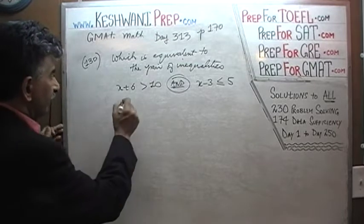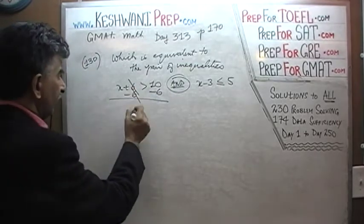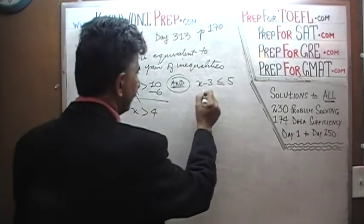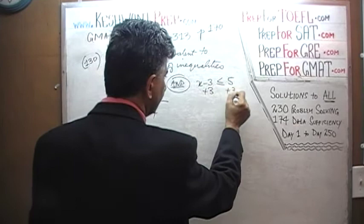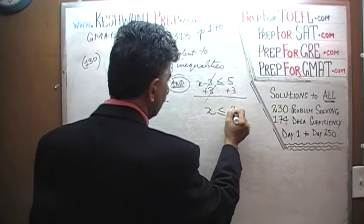We have to solve for x here. Let's subtract 6 from both sides so we can have the x by itself. 6 drops out and this one tells that x has to be more than 4. Let's see what this says. If you were to add 3 to both sides, 3 will drop out.